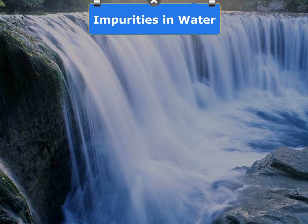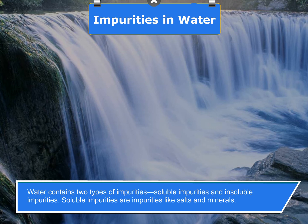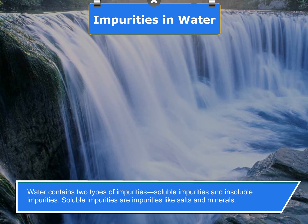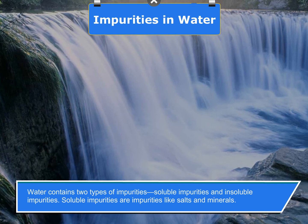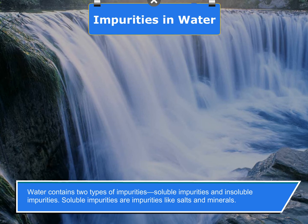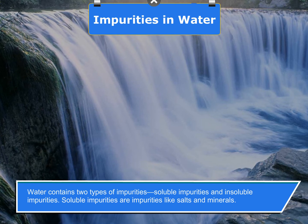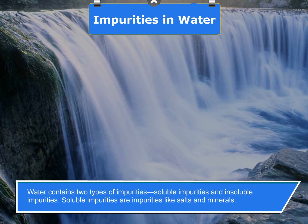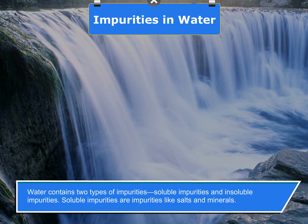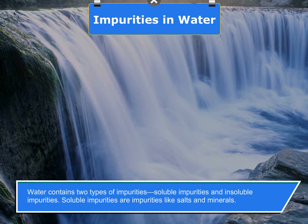Water contains two types of impurities: soluble impurities and insoluble impurities. Soluble impurities are impurities like salts and minerals.